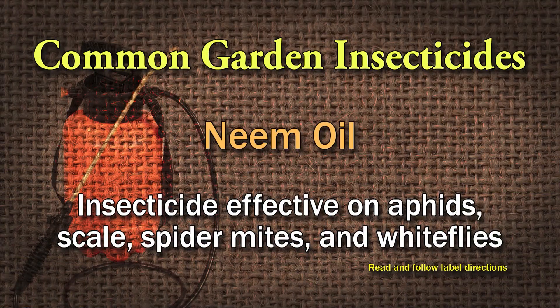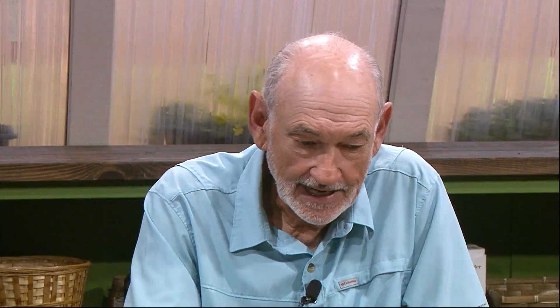There are some caterpillars BT won't control. Another biological is clarified neem oil, which does a pretty good job on aphids, armyworms, beetles, scales, spider mites, and whiteflies. If BT doesn't do the trick, two of the oldest and most common insecticides are carbaryl and malathion.